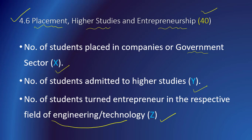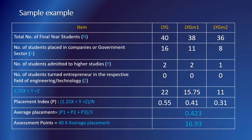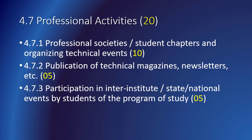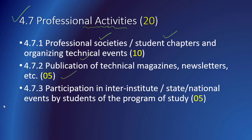A sample example for calculation of the placement index and criterion 4.6 is presented. The last sub-criterion under criterion 4 is professional activities of students. Under this, there are three sub-criteria: professional societies and student chapters in the institute with organized technical events — 10 marks; publication of technical magazines, newsletters, etc. — 5 marks; and participation in inter-institute, inter-state, or national level events by students of the program — 5 marks. Documentary evidence of all three should be collected and preserved to be presented to the visiting team, and this can also be maintained in systematic soft or electronic form.